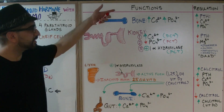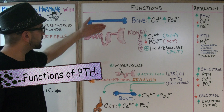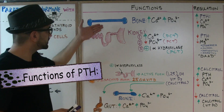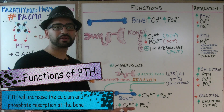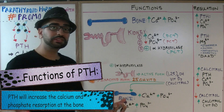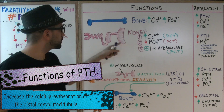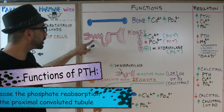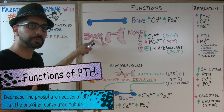There are different functions of the parathyroid hormone. Looking at the bone, the parathyroid hormone is going to increase calcium resorption and also increase phosphate resorption. At the level of the kidney, at the distal convoluted tubule, it's going to increase calcium reabsorption. At the proximal convoluted tubule, on the other hand, it's going to decrease phosphate reabsorption.